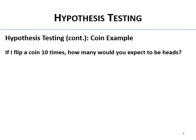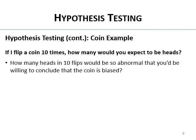If I had a coin and flipped it 10 times, how many times would you expect it to come up heads? Most people say five. How many heads in 10 flips would be so weird that you'd be willing to conclude the coin is biased? If I got five heads out of ten, you wouldn't say something's wrong — that's what you'd expect. Seven out of ten is getting weirder. Ten out of ten — you'd probably say something's messed up with that coin.